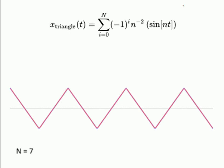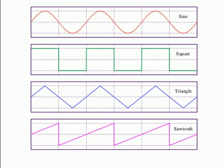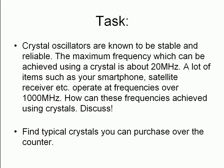There's also a formula for triangular waveforms and sawtooth waveforms. The more harmonics you add, the more defined the triangular wave becomes. So we've got sine, square, triangle, and sawtooth waveforms covered.